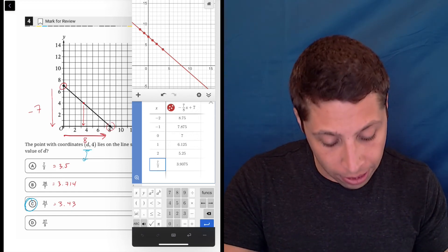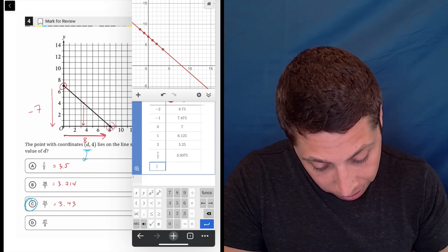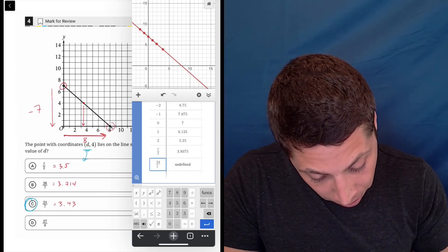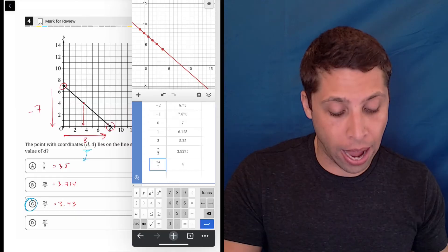And that gives me a y coordinate of three point nine three seven five. But it's supposed to be four exactly so that doesn't work. So okay, let's get rid of that. Let's do another one. Let's just do the right answer, 24 divided by seven, and you can see it gives you four exactly.